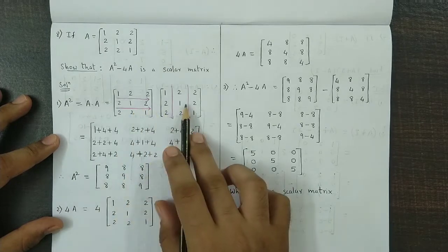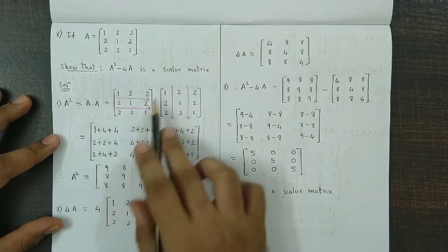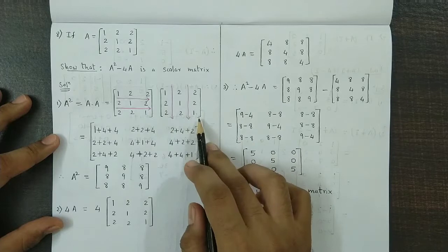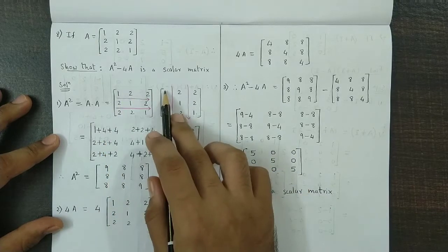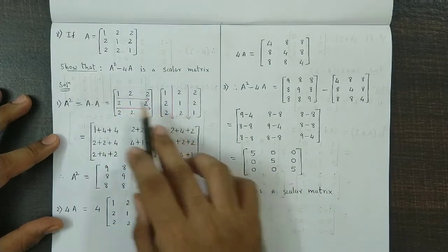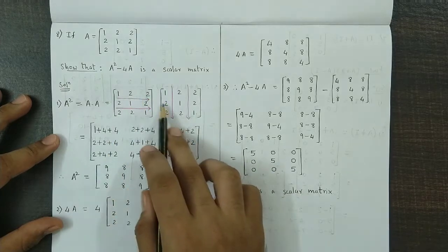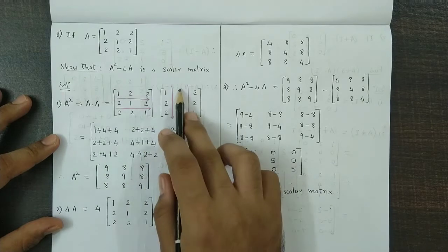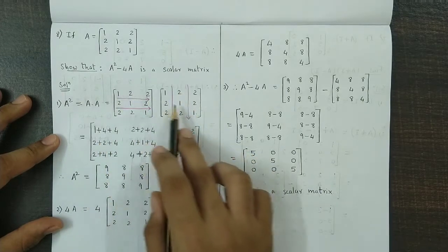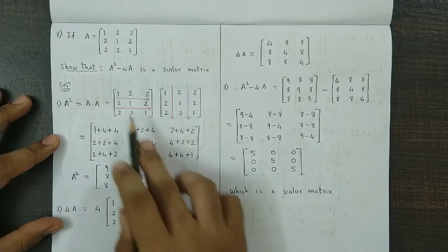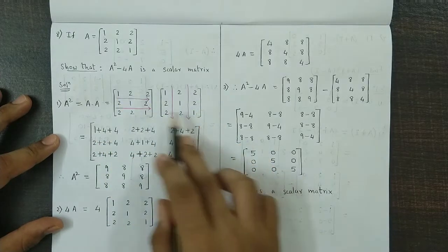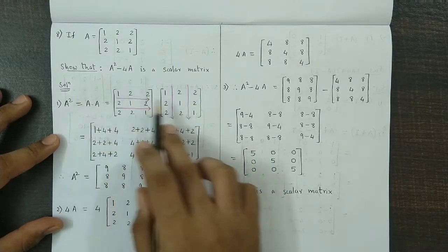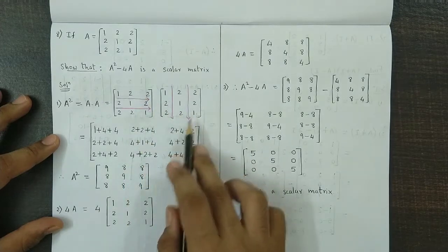Now you multiply the two matrices, multiplying rows with the corresponding columns. We get R1 into C1 gives 1 plus 4 plus 4. Then R1 into C2 will be 2 plus 2 plus 4. R1 C3 will be 2 plus 4 plus 2.